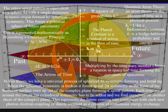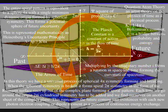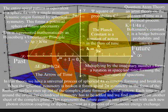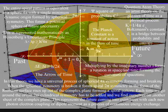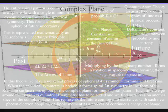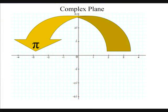Each time we go around the origin, two pi cylindrical symmetry has to be added, and we find ourselves on another sheet of the complex plane. Pi represents a semicircle of the complex plane, with two pi representing a complete rotation.